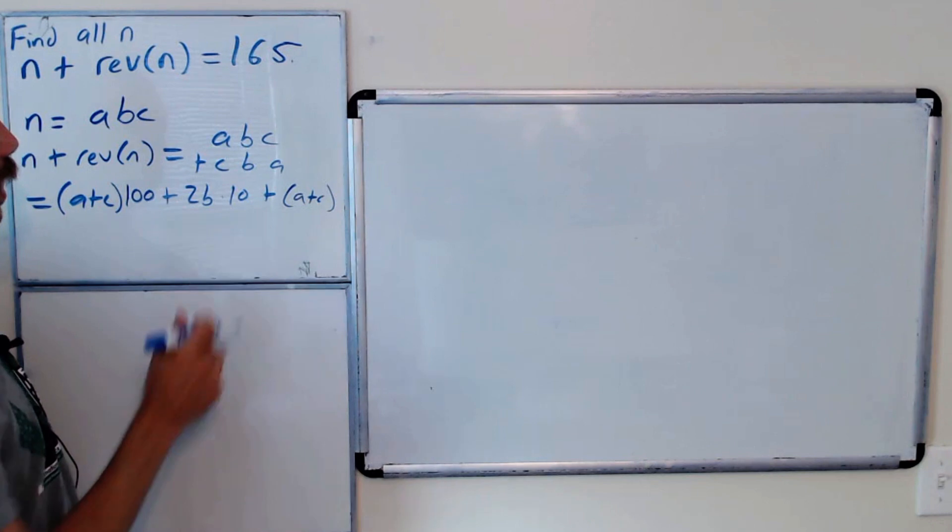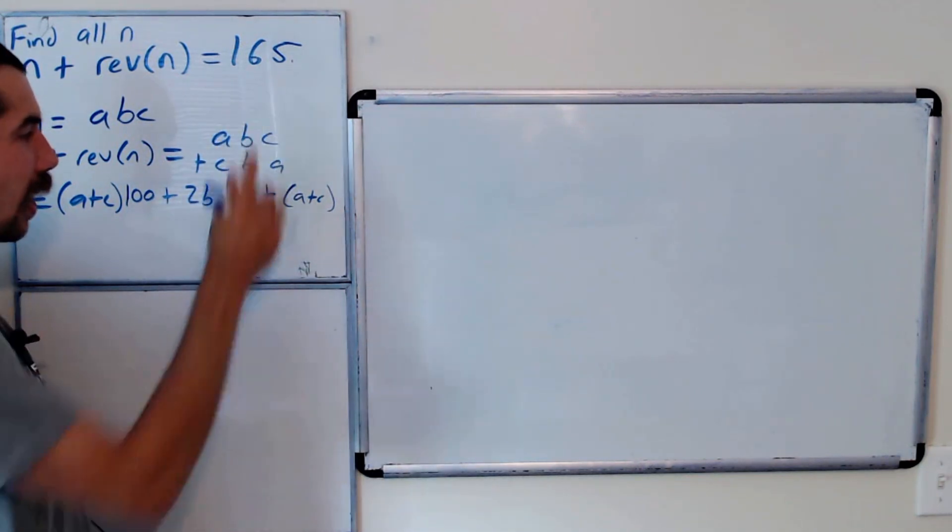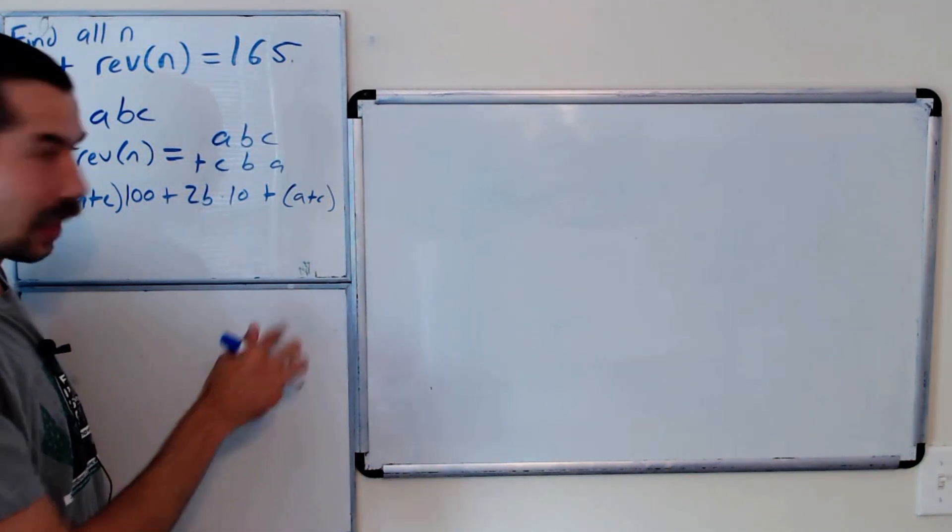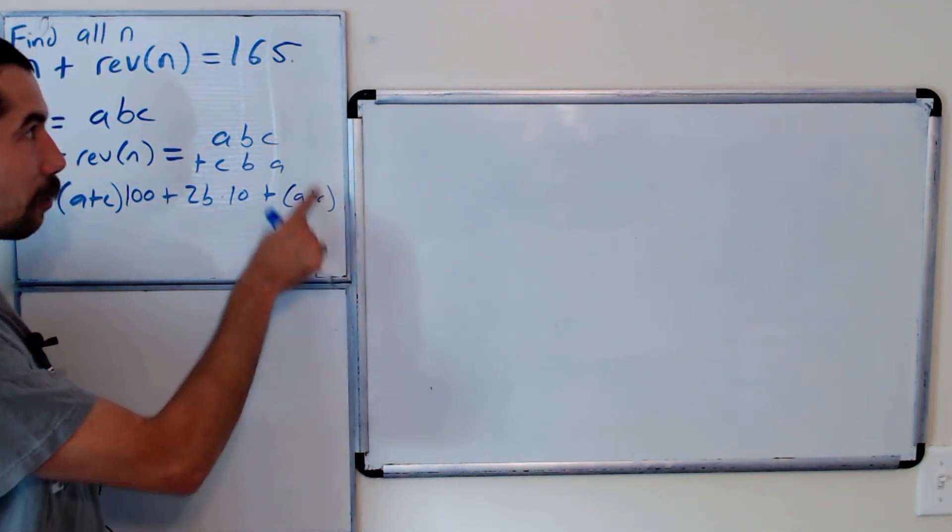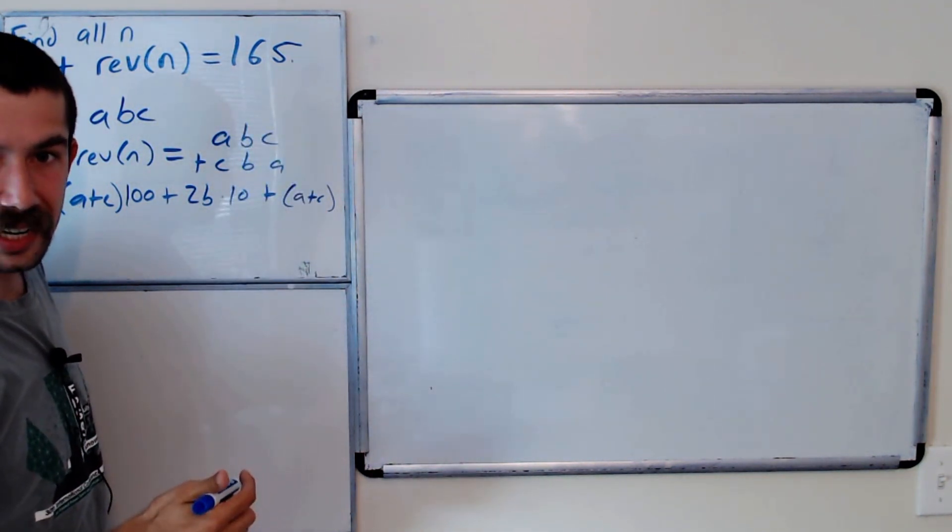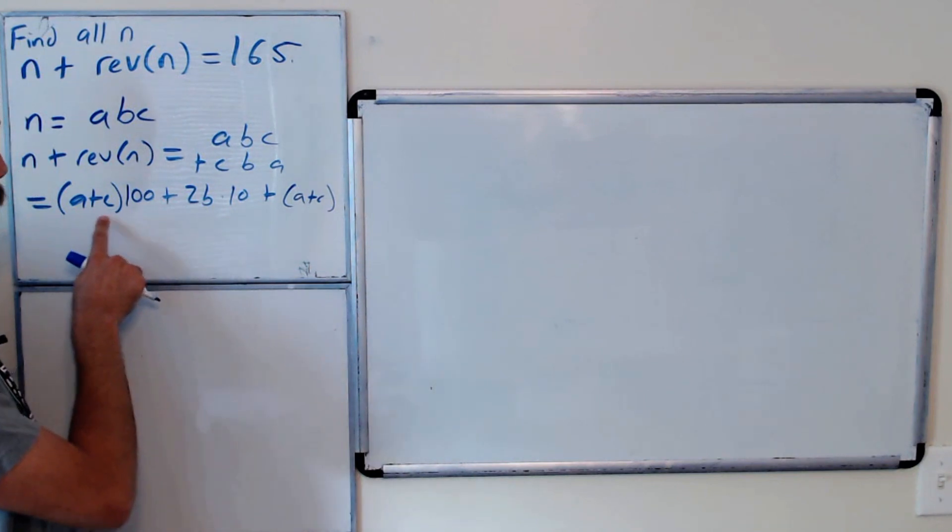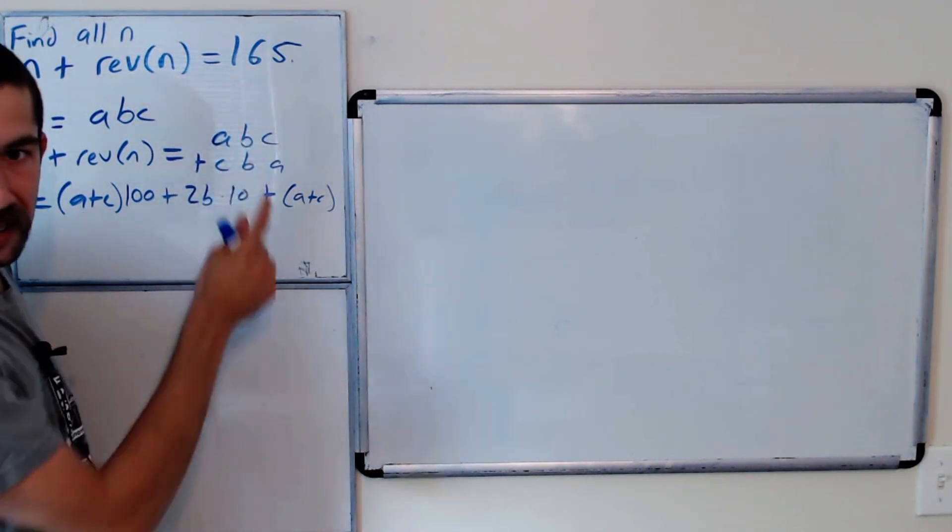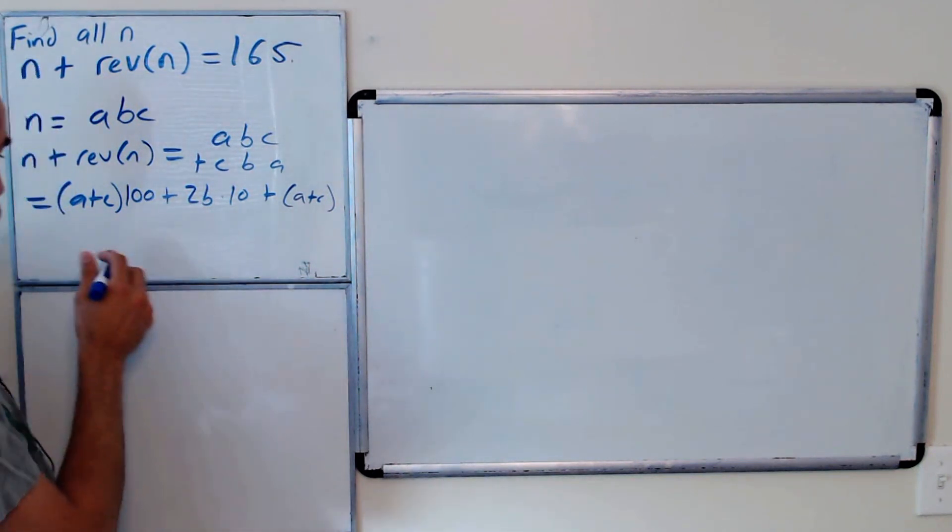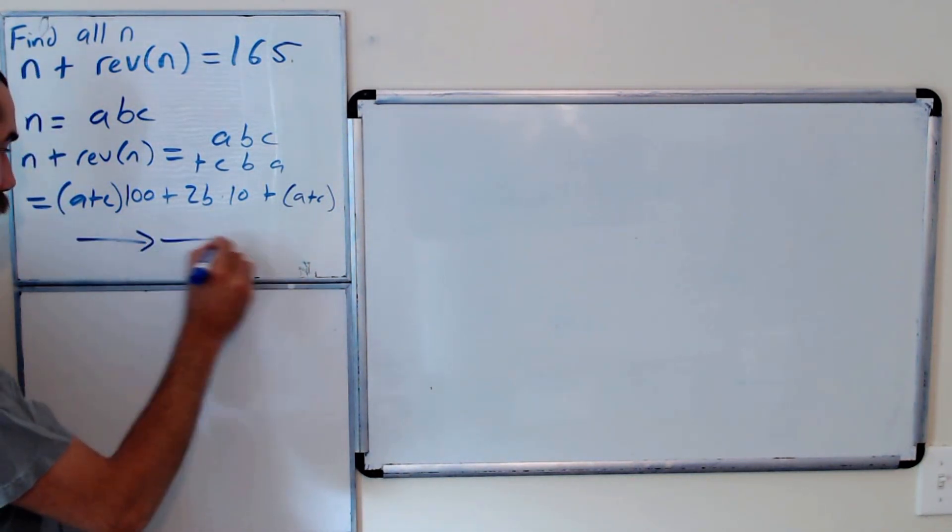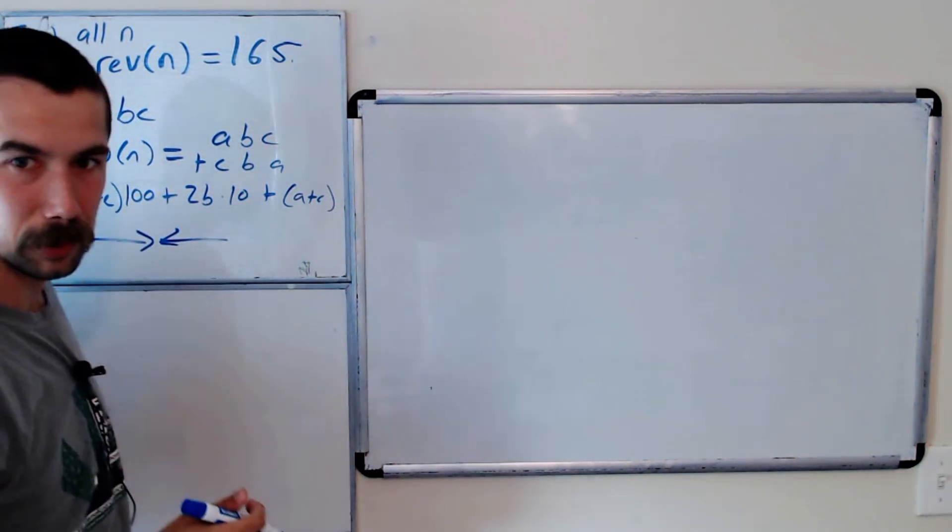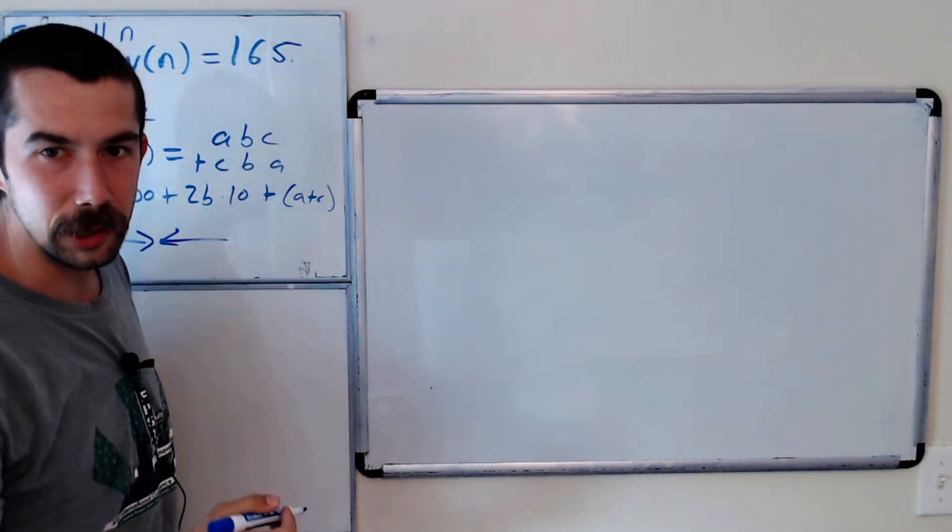If this equals 165, then a plus c equals either 5 or 15, but we need a plus c to also be 1. So that has no solution. We know that n is going to be a two-digit number.